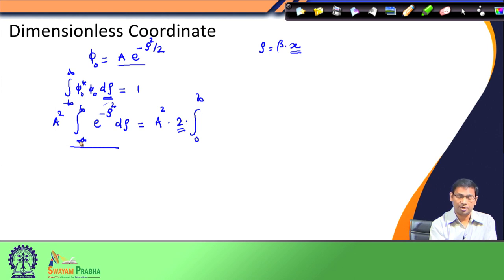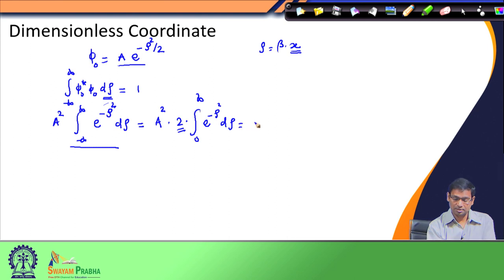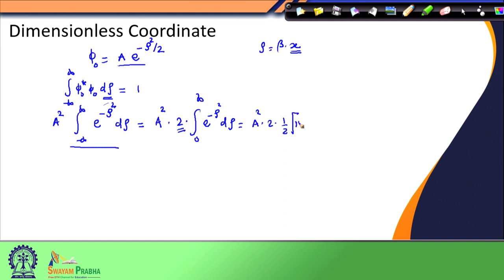The integral from minus infinity to plus infinity gives twice the value of the integral from 0 to infinity of e to the power minus rho squared d-rho, and this value equals the square root of one-half times the square root of pi. Setting A squared times this equal to 1, we find that A equals 1 over pi to the power one-quarter.